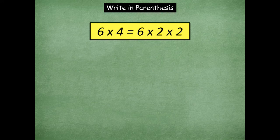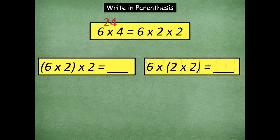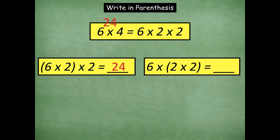Let's look at another example: six times four equals six times two times two. You can put your parentheses around the first two or the second two. Six times four is 24. So six times two is 12, and 12 times two is 24. Or with parentheses on the right side: two times two is four, and six times four is 24. Whichever way you want to use the parentheses is absolutely up to you.